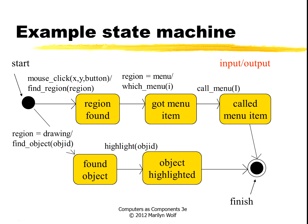The other case is if we get a mouse click as input, then our output after the slash is going to be find region. That means we found a region. If the region is menu, then our output will be calling which menu. We go to got menu item. We call this next function call menu. We go to the state where we completed the call menu item, and then we finish.